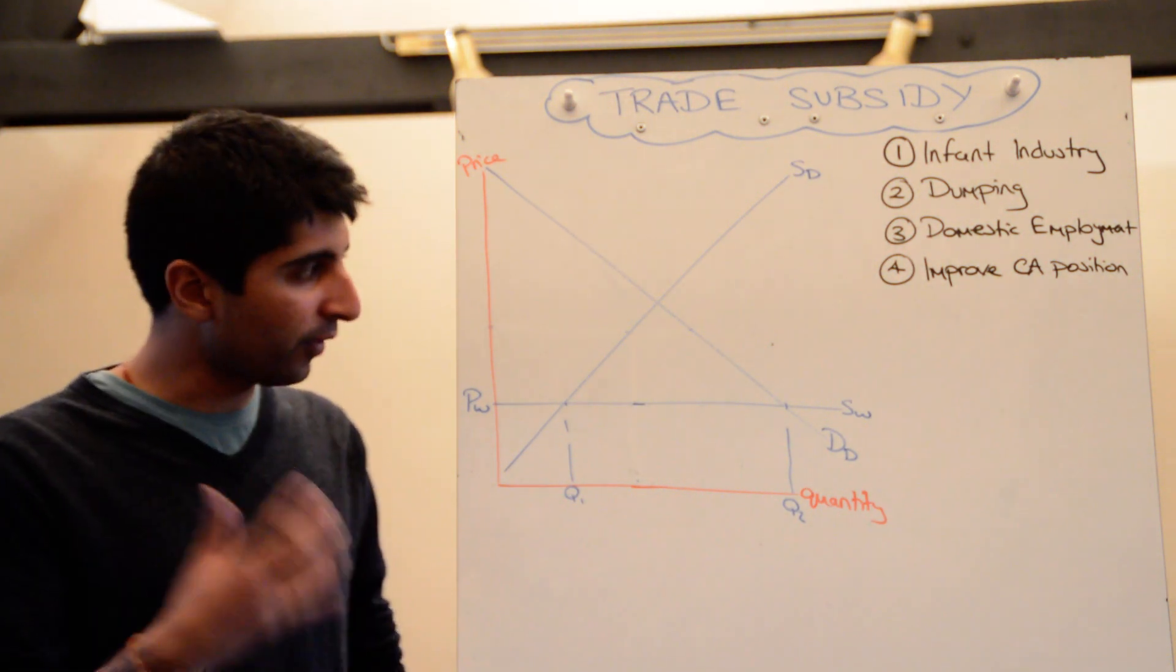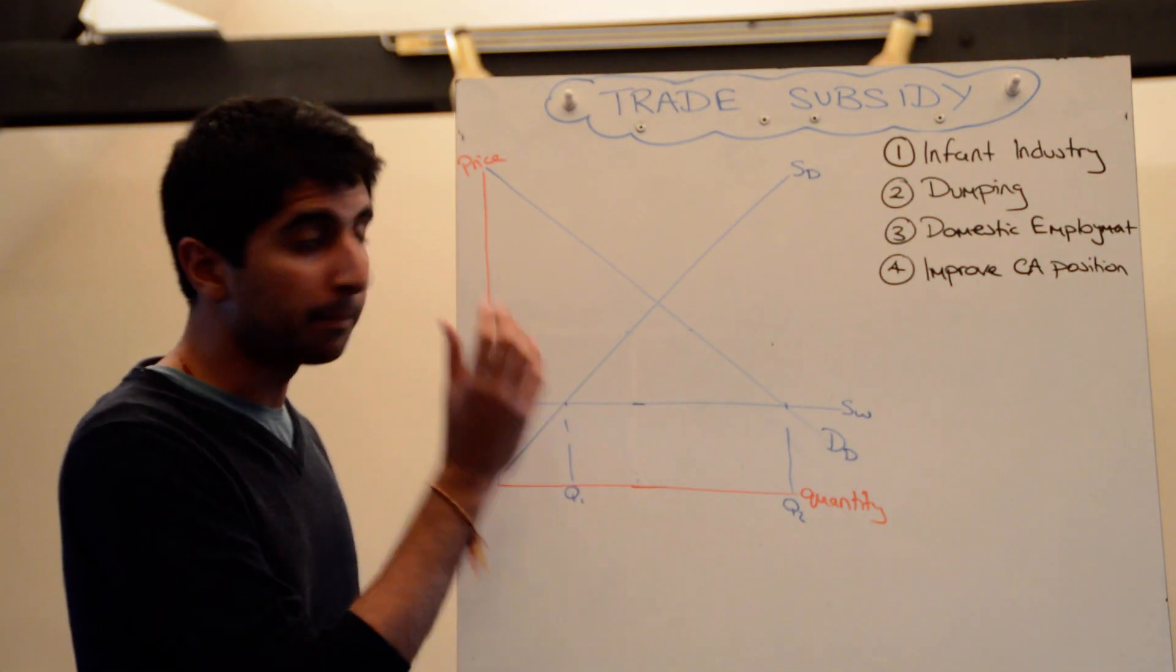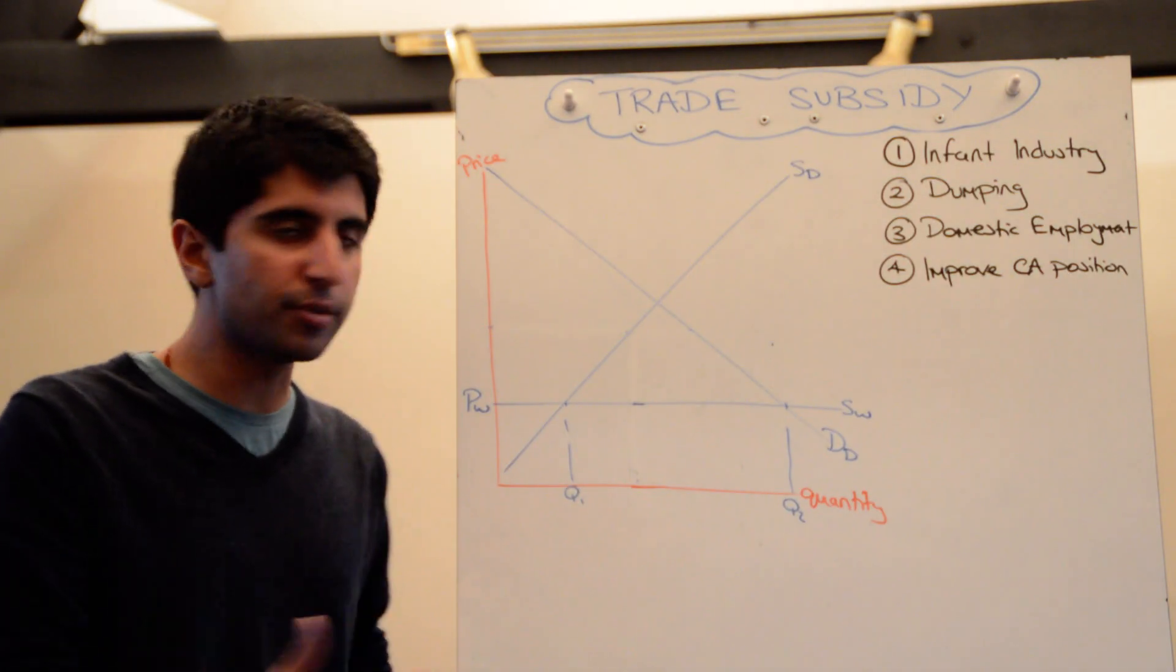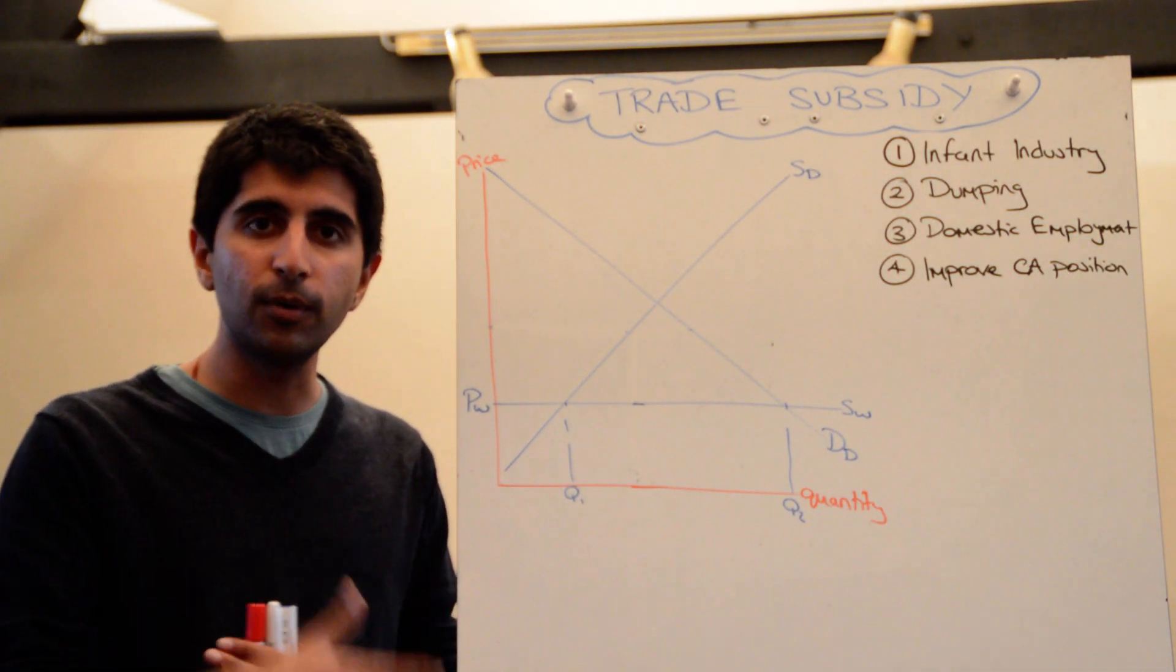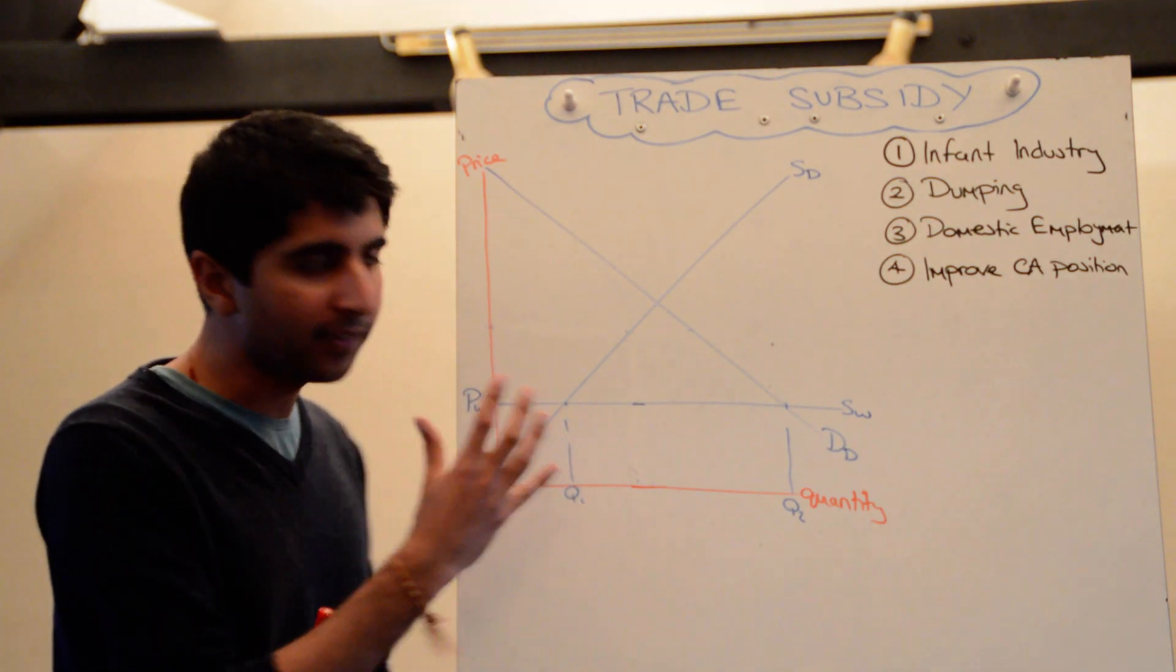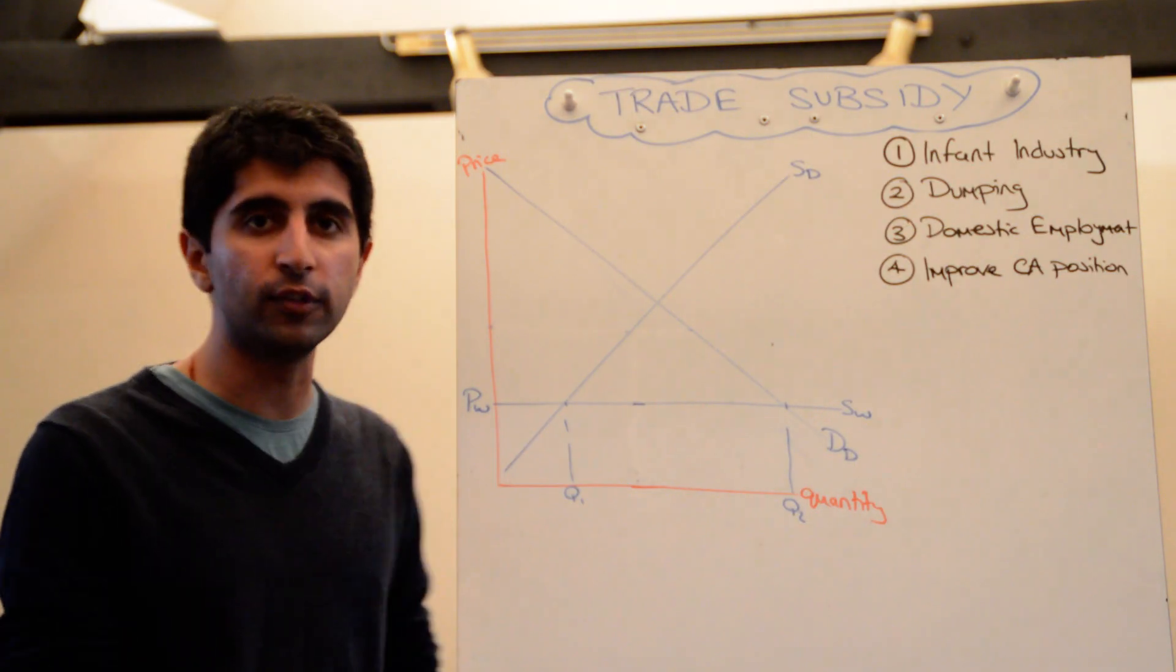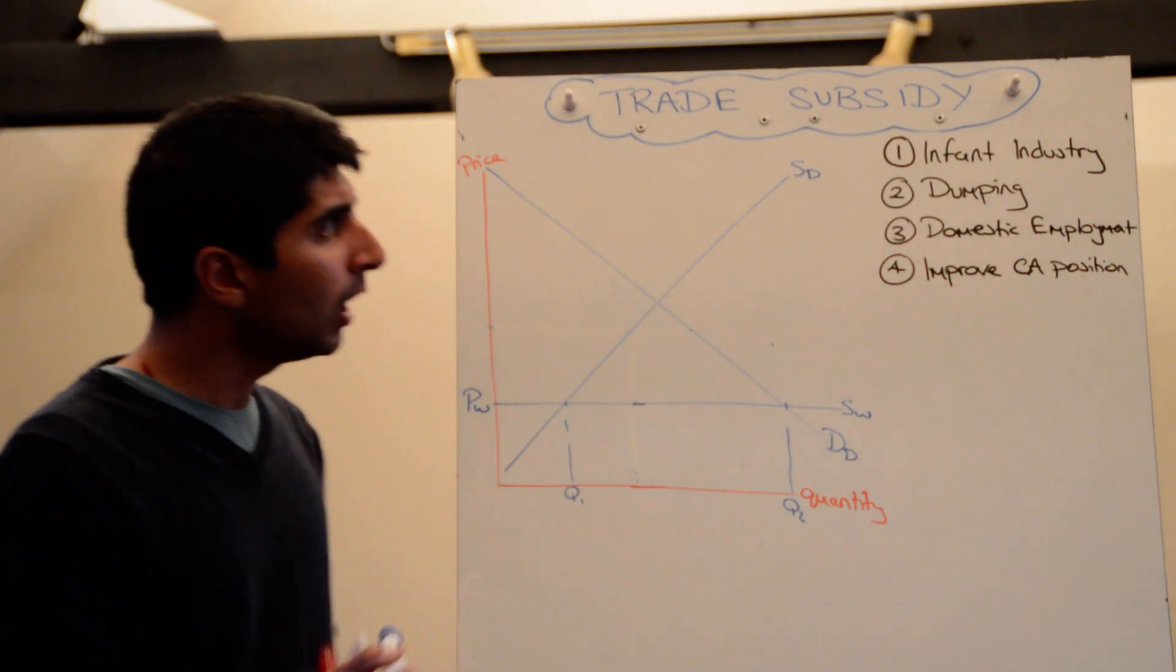So we're going to follow the same pattern. We're going to look at how a subsidy affects the market. We're then going to apply some of the generic arguments for protectionism to this diagram. And then I'm going to make a second video. The next video will be dissecting the diagram in more depth to give you the key analysis points you need to score very highly if you want to use this diagram and this theory in your essays.